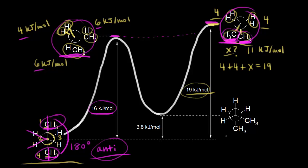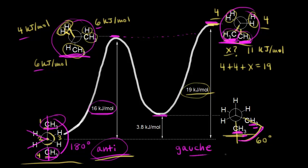Finally, let's look at our other staggered conformation. Notice it is higher in energy than the anti-conformation. The dihedral angle between the methyl groups is 60 degrees, and this is called the Gauche conformation. The Gauche conformation is a little higher in energy than the anti-conformation because these two methyl groups are closer together in space. We don't worry about torsional strain here, but we do have steric hindrance — the hydrogens on these methyl groups can get pretty close to each other, which has a destabilizing effect. So while the Gauche conformation is staggered and more stable than the eclipsed conformations, it is not as stable as the anti-conformation.